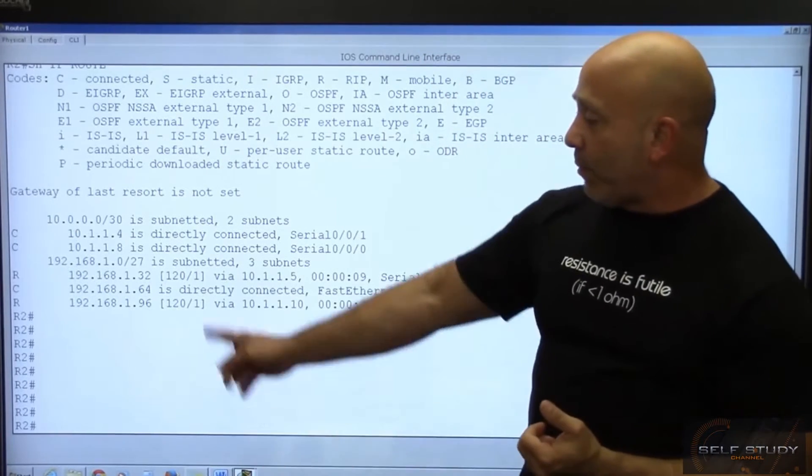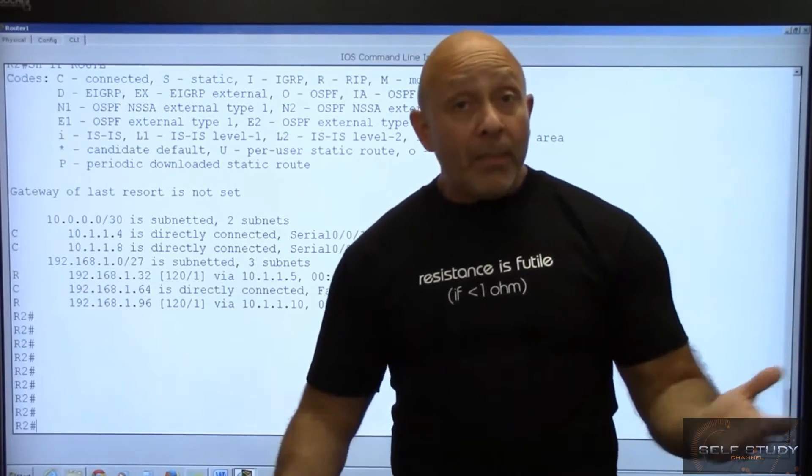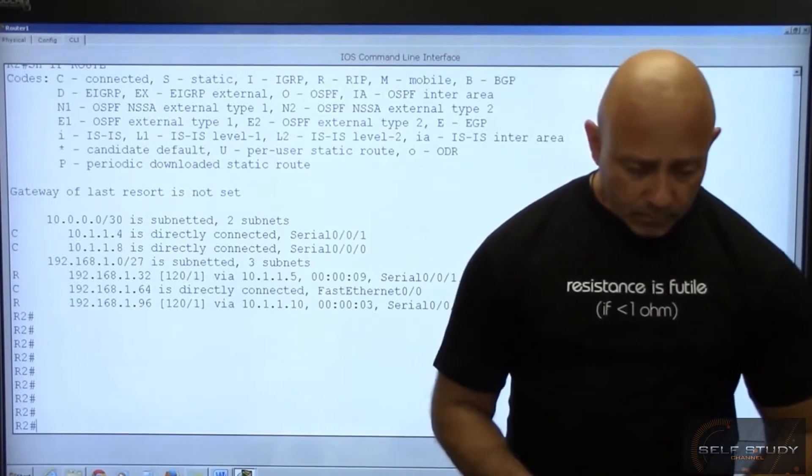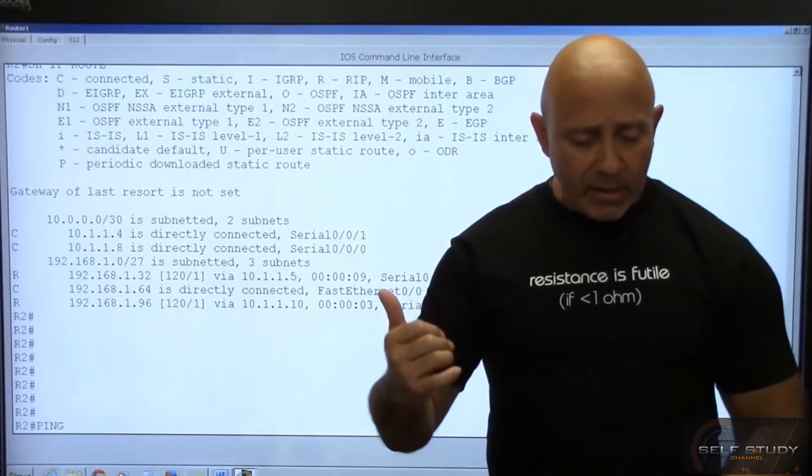We're learning about the 32 network from RIP and we're learning about the 96 network from RIP. They're both one hop away, so RIP is working on the network.